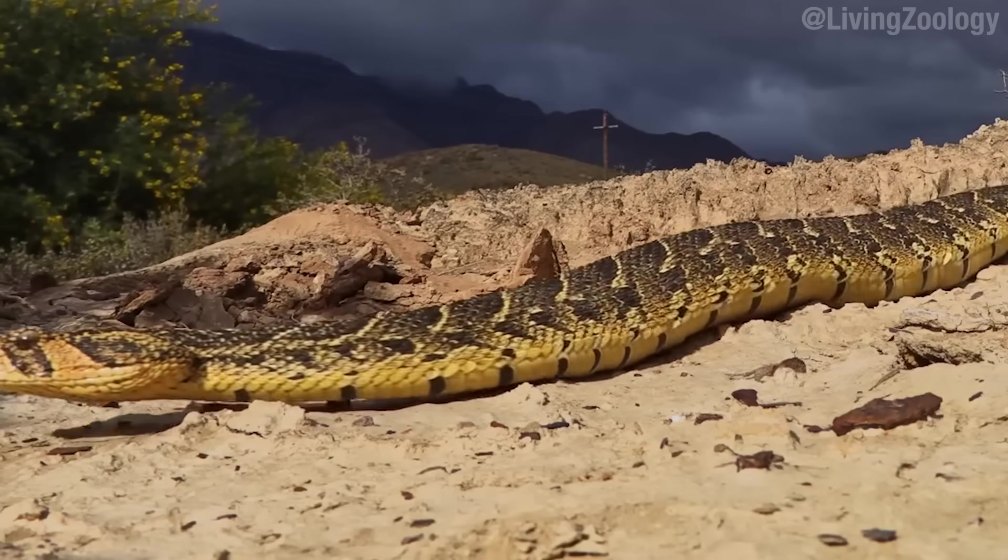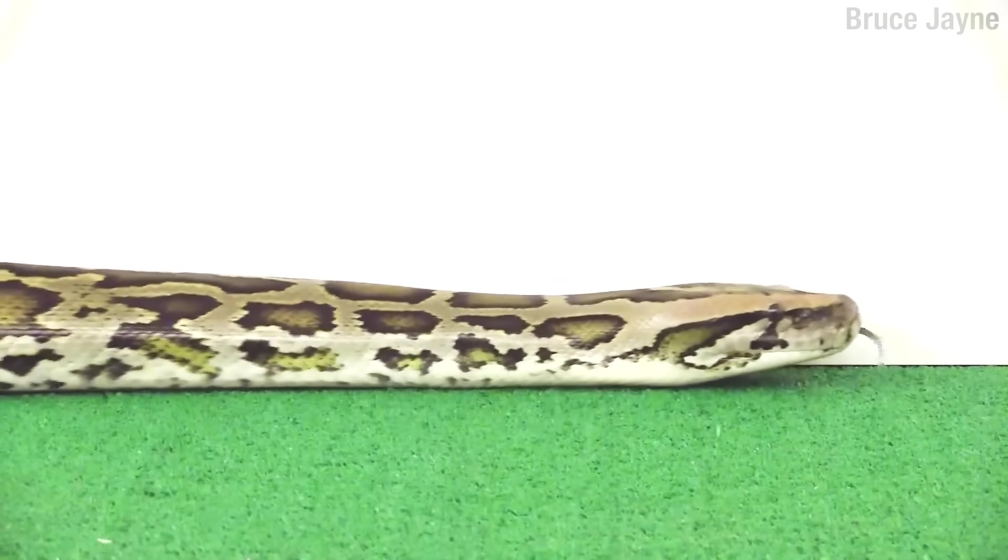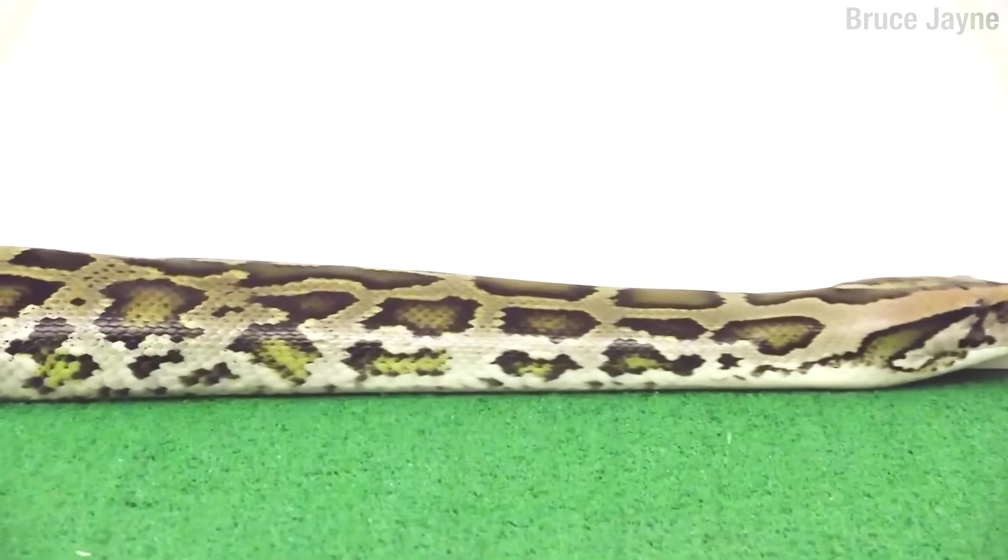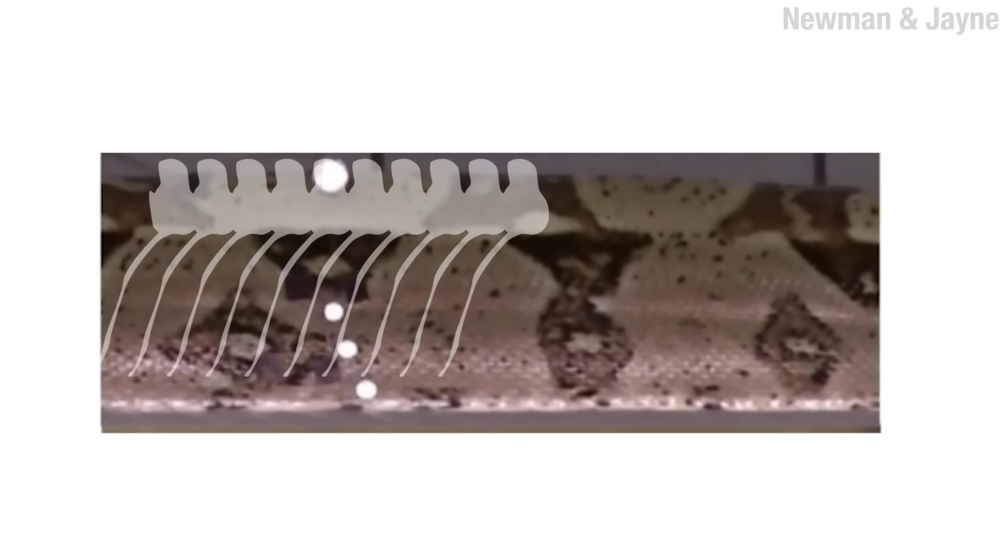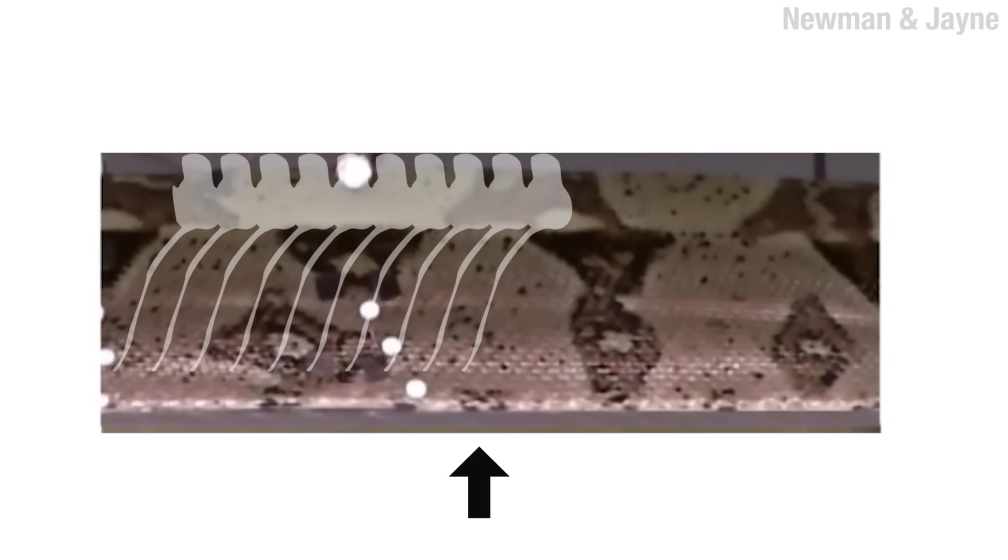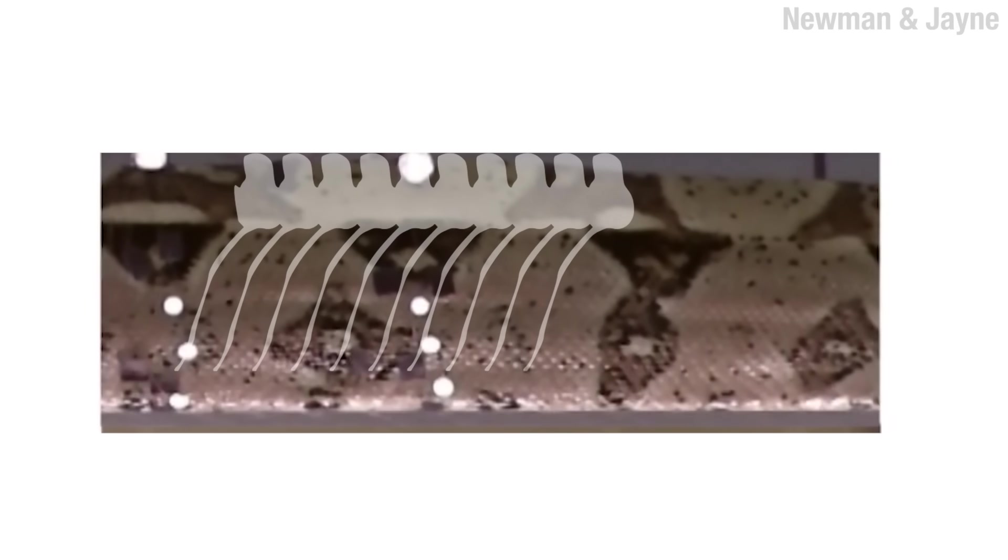Now, you might expect that all those ribs inside the snake move like a slinky. But in fact, the ribs and vertebrae are sort of pulled along by muscles attached to the skin. Here, you can see the skin closer to the belly sort of stretch out and reach forward. Then, a section of the belly makes contact with the ground and tightens up a bit.